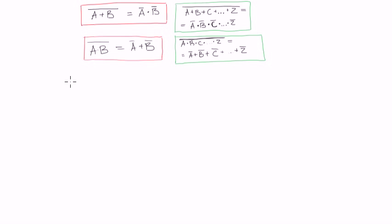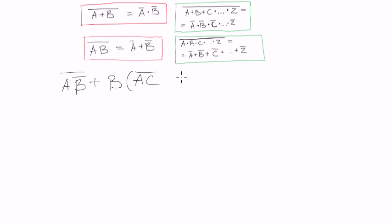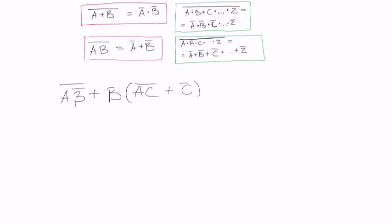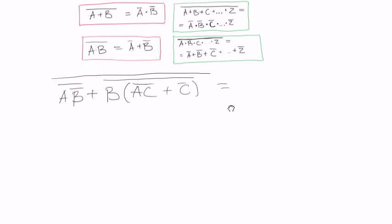So let's do something like this: A·B negated, say both negated, plus B·A·C both negated, plus C negated. Let's negate some more stuff - let's negate this thing and negate the whole thing again. Yeah, that should look at least a bit more complicated.